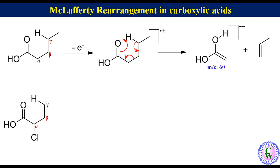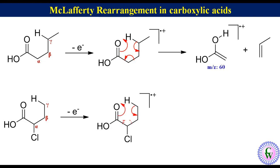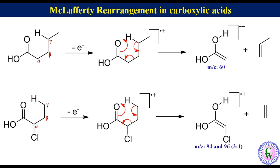2-chlorobutanoic acid is also having gamma hydrogen. Removal of one electron gives a parent radical cation which undergoes McLafferty fragmentation to produce a radical cation and an ethylene molecule. This radical cation will show two peaks at m/z values of 94 and 96 with an intensity ratio of 3:1, because there is one chlorine atom in it and the relative abundance of the two isotopes of chlorine-35 and chlorine-37 is 3:1.